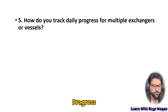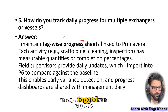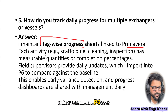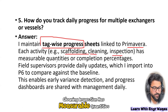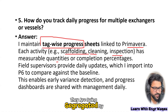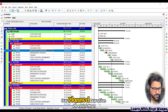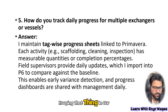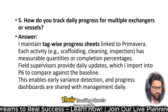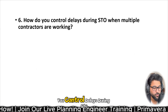How do you track daily progress for multiple exchangers or vessels? I maintain tag-wise tracking linked to Primavera P6. Each activity — scaffolding, cleaning, inspection — has measurable quantities. If there are multiple heat exchangers they are segregated by their tags, and every heat exchanger or pressure vessel has its own planned duration and planned man-hours. Keeping that in mind, we prepare separate Excel tracking sheets for each.